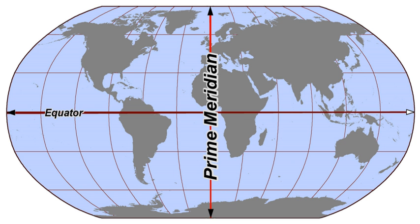In geography and cartography, the hemispheres of Earth refer to any division of the globe into two hemispheres. The most common such divisions are bilatitudinal or longitudinal markers.